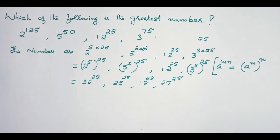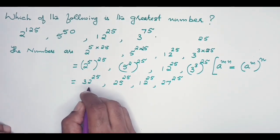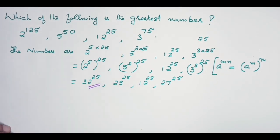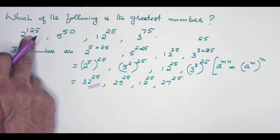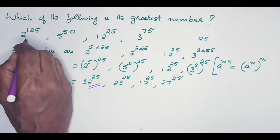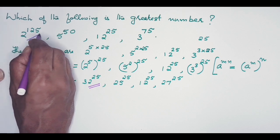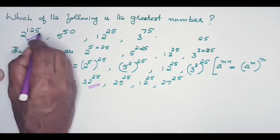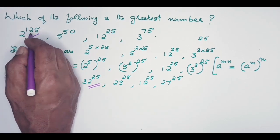So what does that indicate? The first one, 32 to the power of 25, this is the highest number, and this is equal to 2 to the power of 125. That implies among the numbers given for comparison, this is the highest or the greatest number.